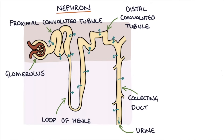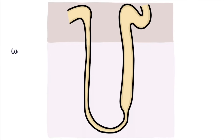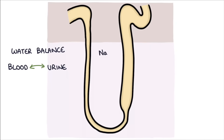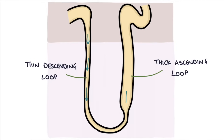For the purpose of understanding loop diuretics, we're most interested in the loop of Henle. It's a key area where water is balanced between the blood and the urine. A large amount of sodium and water are filtered from the filtrate into the blood here. It consists of a thin descending loop where filtrate flows downwards and a thick ascending loop where filtrate flows upwards. There's also a small thin portion at the bottom of the ascending loop, but don't worry about this as it doesn't do very much.